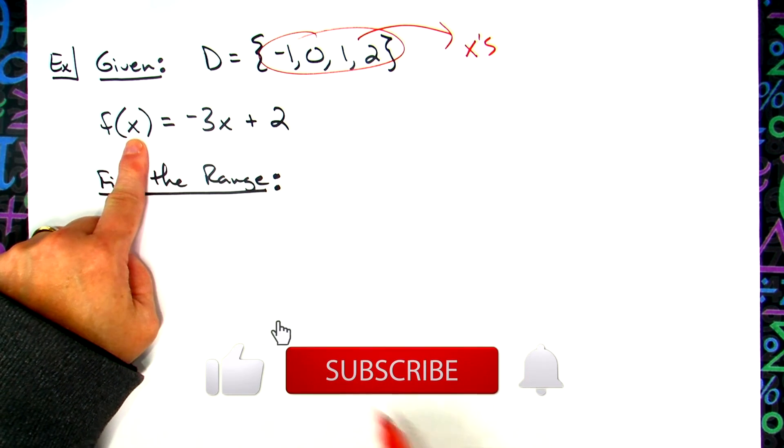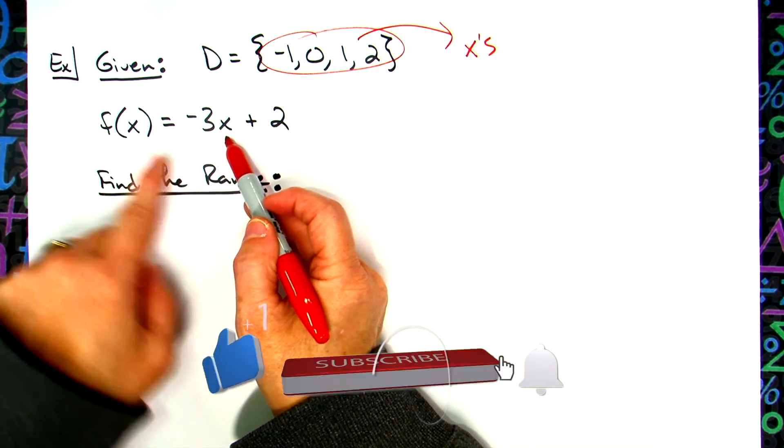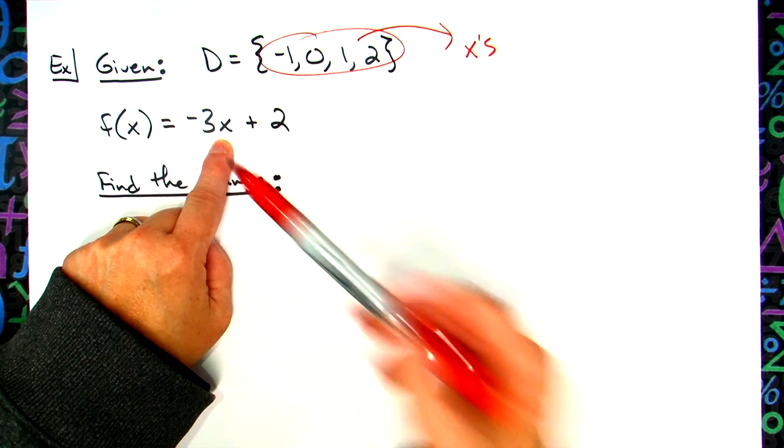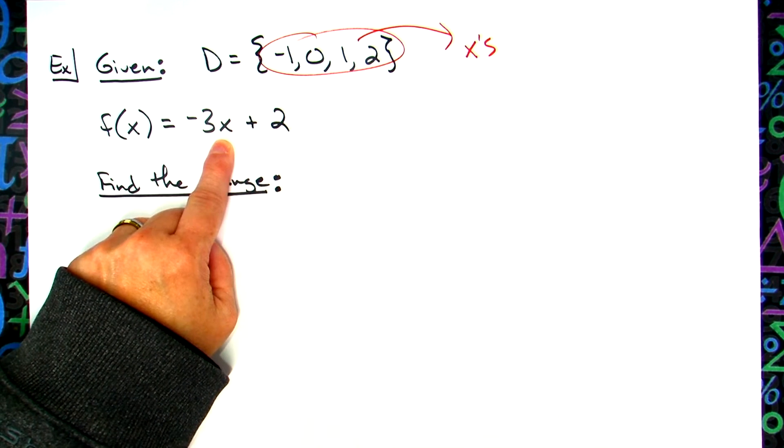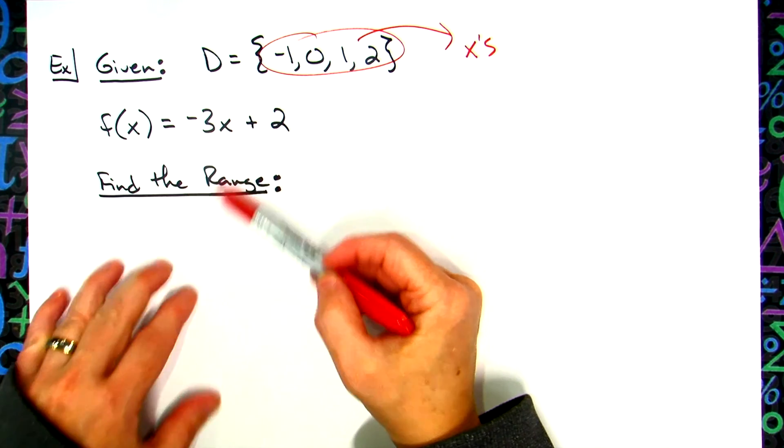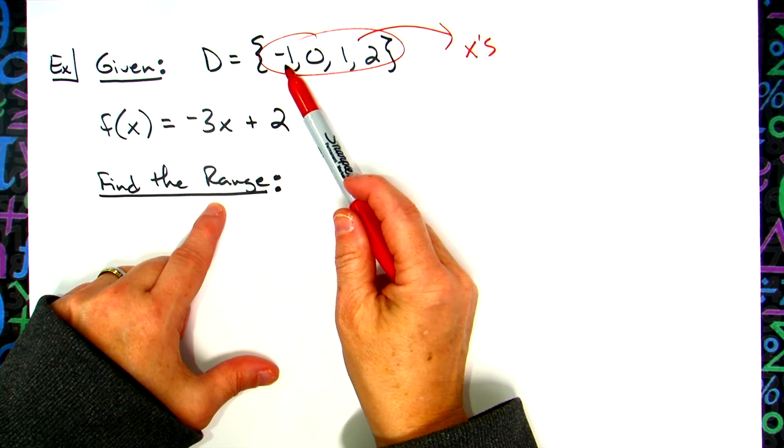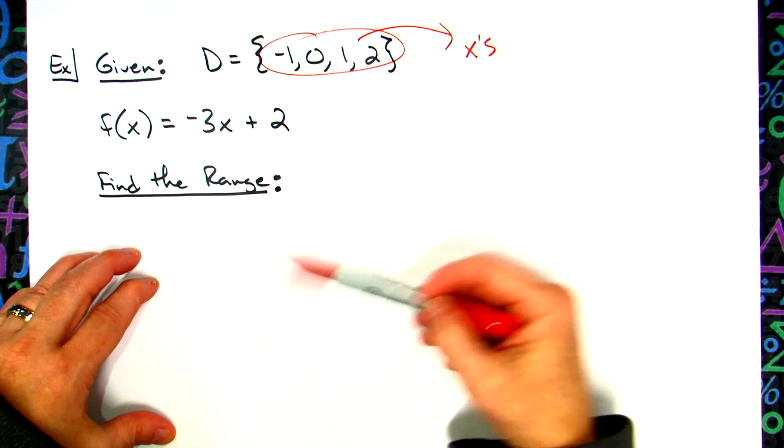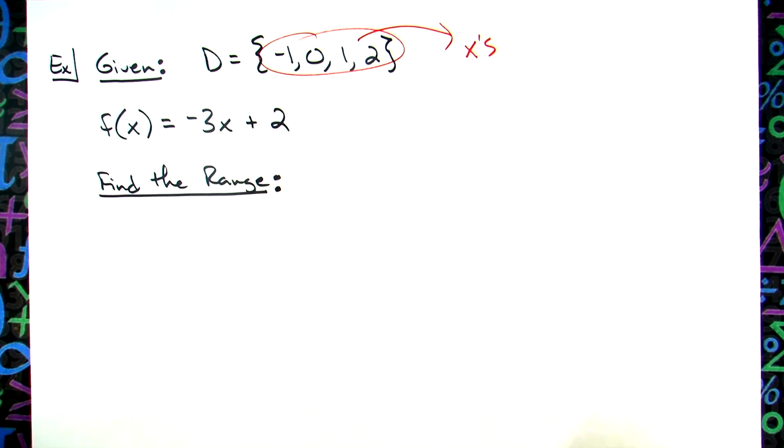If I know that this is my function, and I'm supposed to plug my x's in, can't I plug each one of these x's in, and then it will spit out a y, it'll spit out the range. So in this type of problem, if there are four numbers in the domain, I've got to plug all four of them in, work them out and get four answers, and that becomes my range.